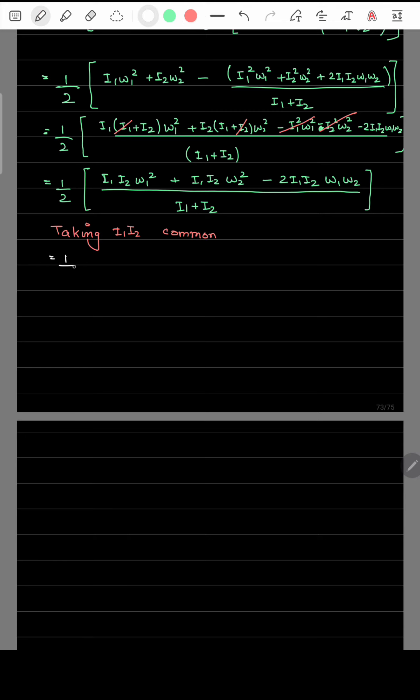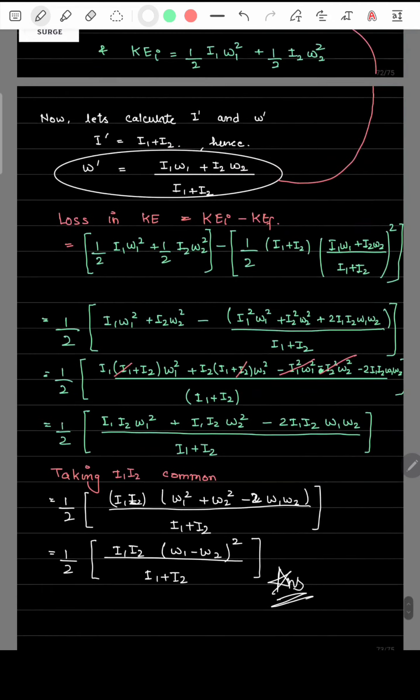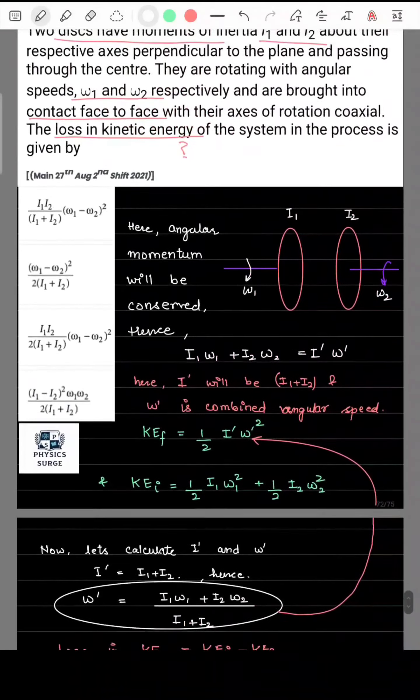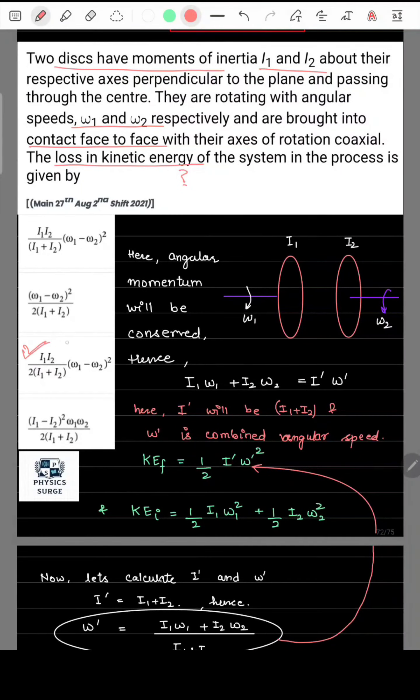Taking i1, i2 common we get omega 1 square plus omega 2 square minus 2 omega 1 omega 2. This can be written as omega 1 minus omega 2 whole square. Hence, this simplified expression matches with the option C. Option C is the answer.